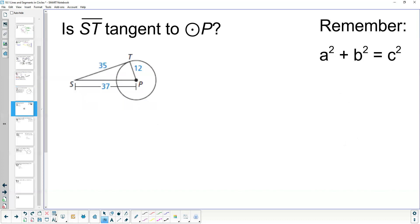Let's look at an example. Is ST tangent to circle P? If it is tangent, this has to be a 90-degree angle. If that's a 90-degree angle, we can use the Pythagorean theorem: leg squared plus leg squared equals hypotenuse squared. If that's not the case, it doesn't make a right triangle, therefore it's not a tangent line.